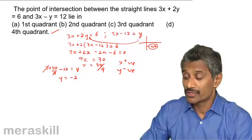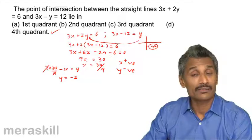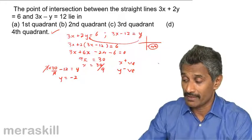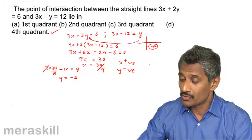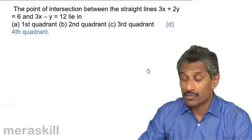Because the solution is 30 by 9 comma minus 2, which has the x coordinate positive and y coordinate negative. Hence, it is going to lie in the 4th quadrant and that's what we have over there.